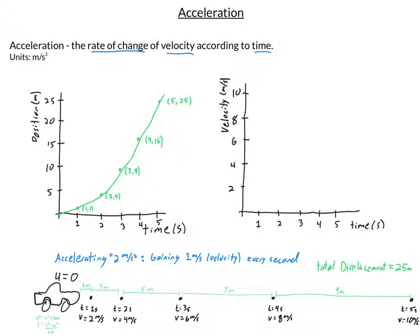If we graph out that displacement data, we find a curve. After 1 second we'd gone 1 meter; after 2 seconds, 1 plus 3 equals 4 meters; after 3 seconds, 1 plus 3 plus 5 equals 9 meters. On a position-time graph, this is an x-squared curve, or a quadratic.